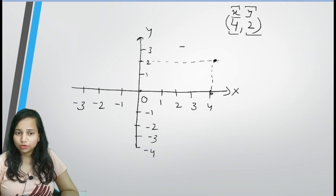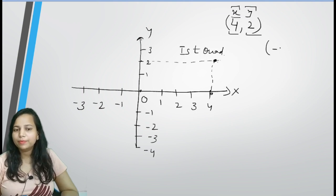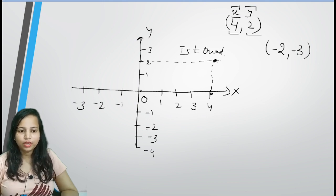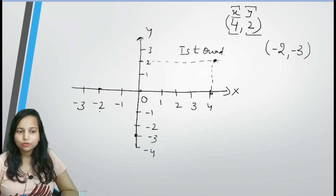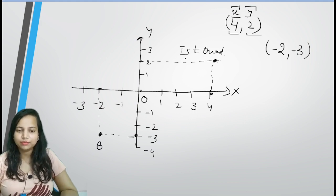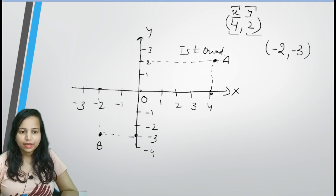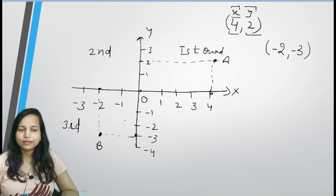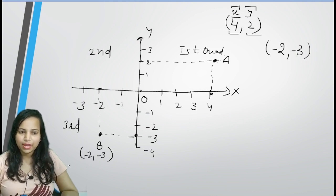Ab agar humare paas points hain (-2, -3) — toh minus 2 x-axis ka yeh raha, aur y-axis ka yeh raha. Toh yeh kahan par intersect karenge: minus 2, minus 3 — yahan par. Toh yeh point B hai — in coordinates par object ki position yeh hai. Aur kaunsa quadrant hai? First hota hai, phir anticlockwise mein second hota hai, and this is the third one. Third mein dono x-axis and y-axis negative hote hain — toh coordinates hain minus 2, minus 3.